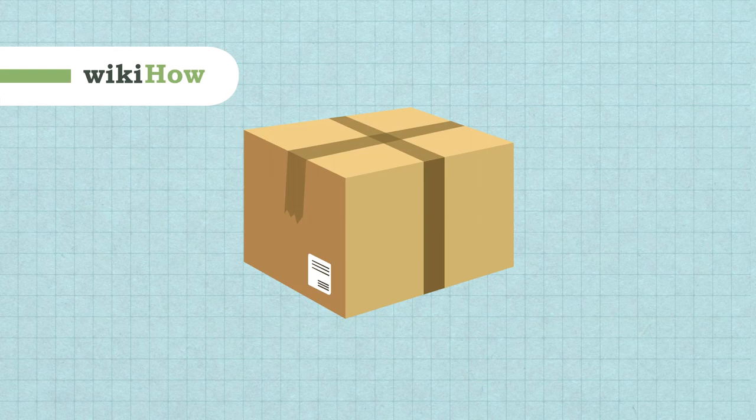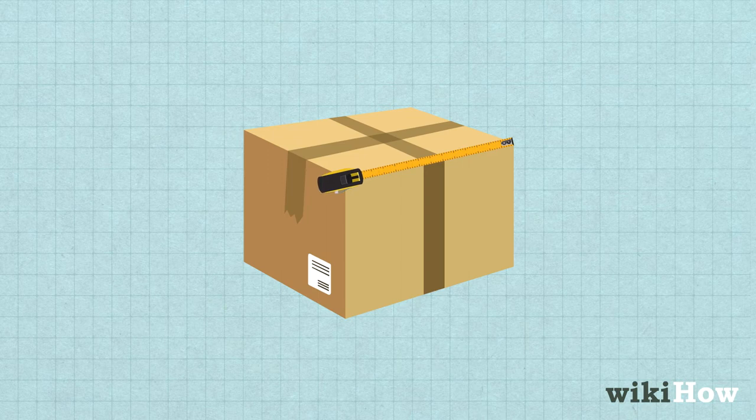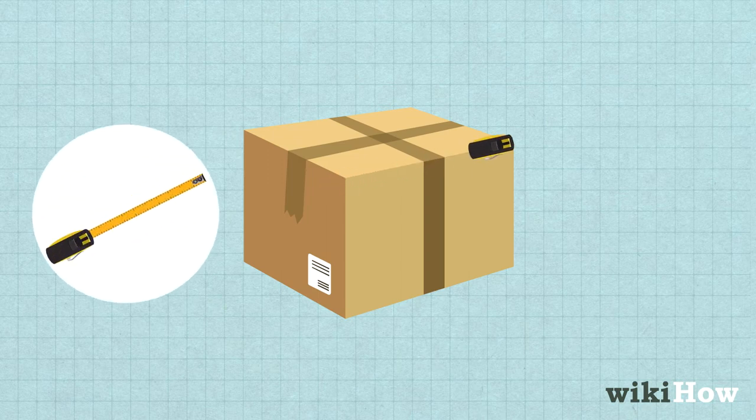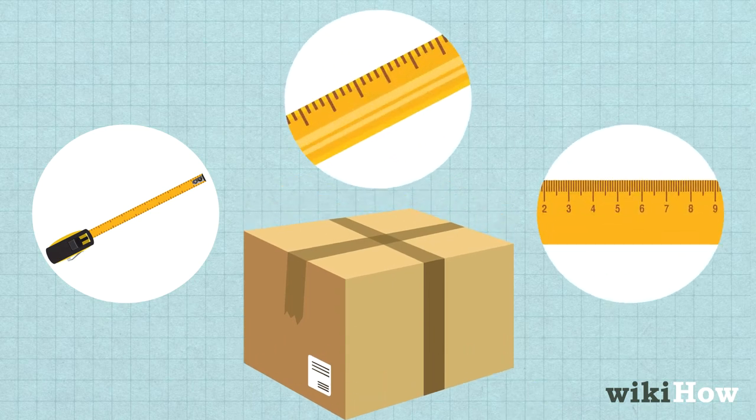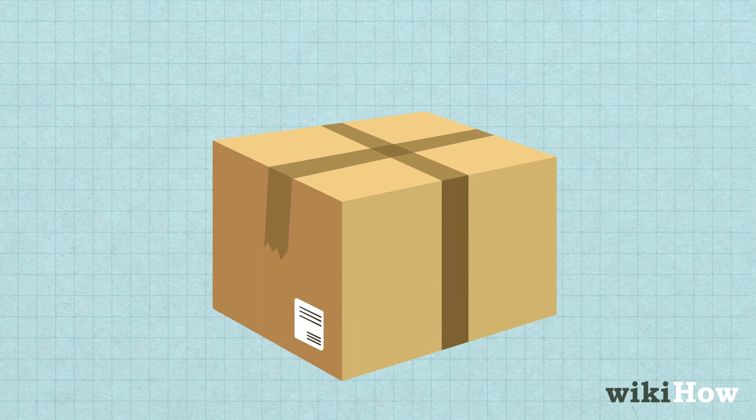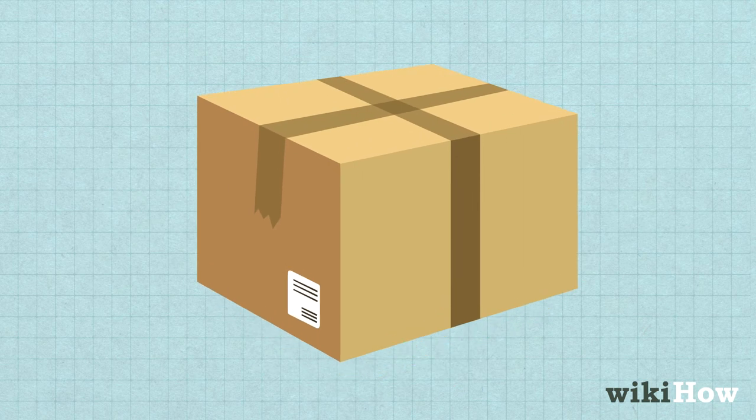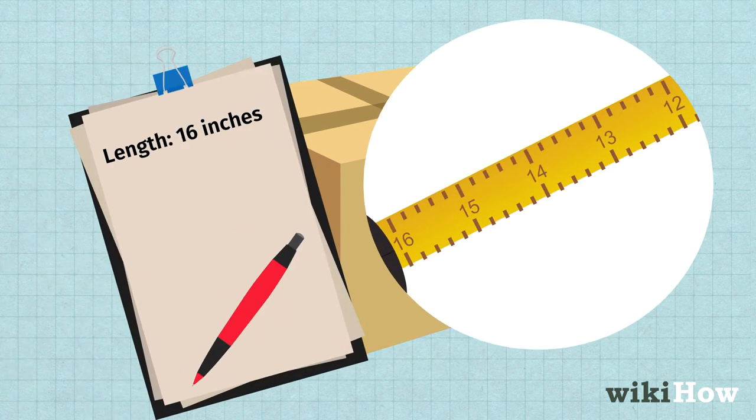To measure the dimensions of a shipping box, start by measuring one of the long sides of the package from one end to the other with a measuring tape, measuring stick, or ruler. This measurement will be the length. Write down the number so you don't forget.